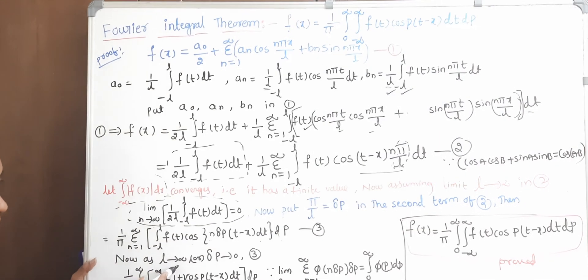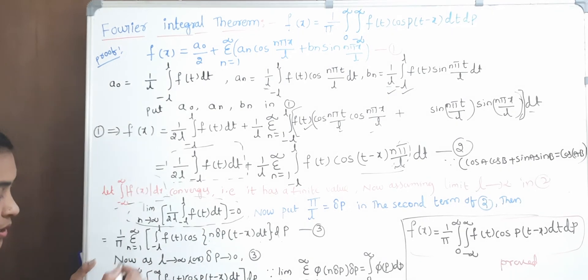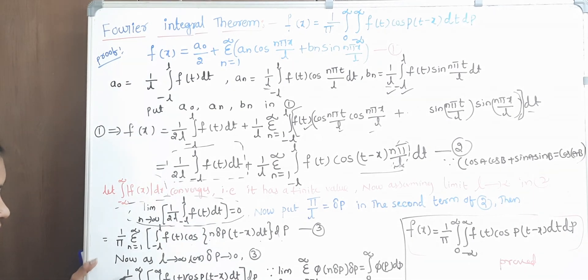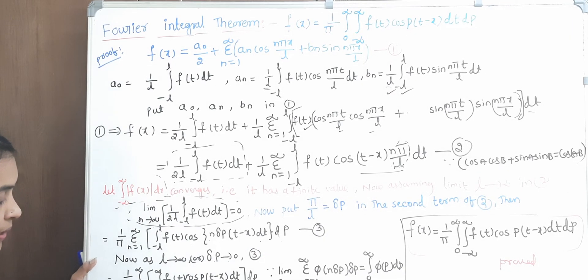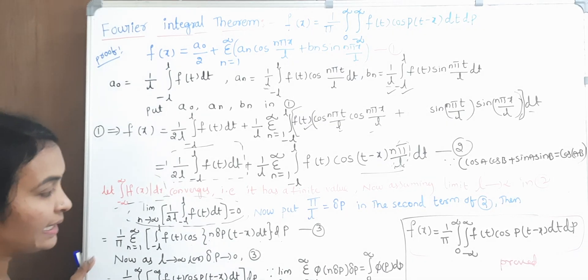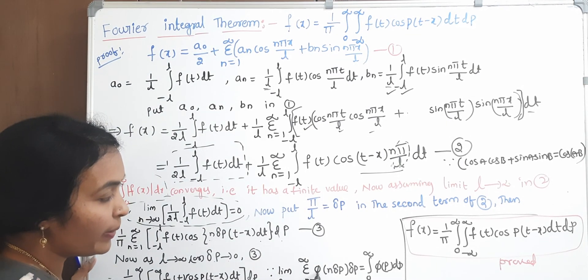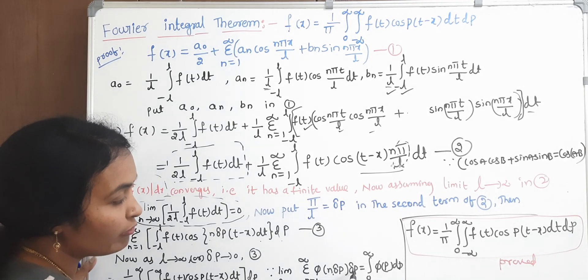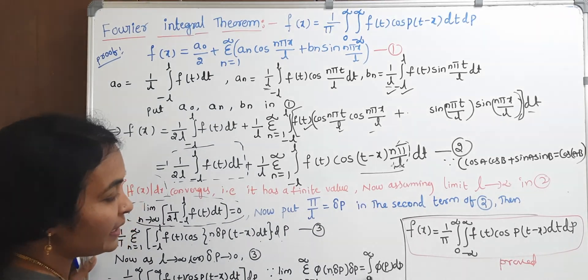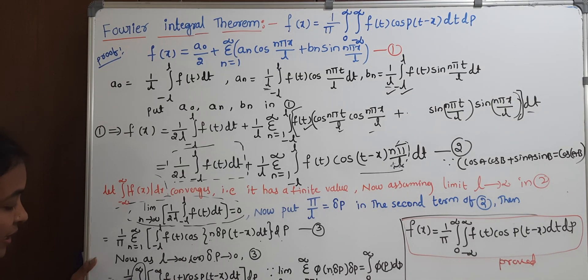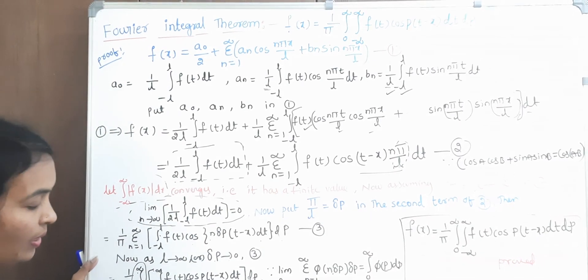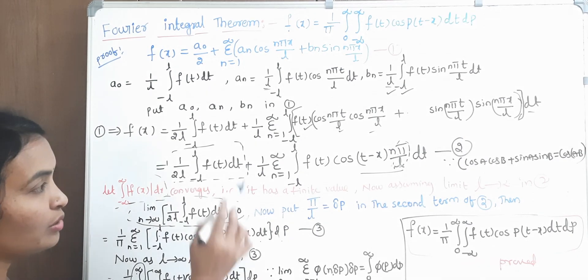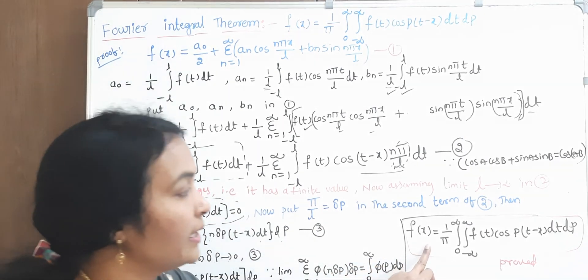Now, as l tends to infinite, delta p tends to 0. If the function — summation from n=1 to infinite of pi(n) times delta p, with delta p tending to 0 — equals the integral from 0 to infinite of pi(p) dp. By using that, taking 0 to infinite, and substituting l tends to minus infinite to infinite, I will get the proof.